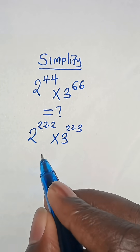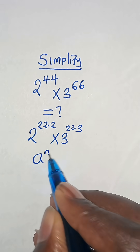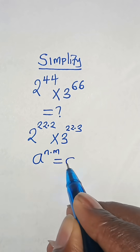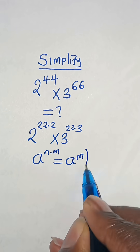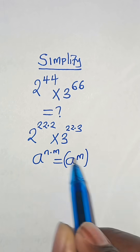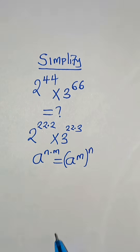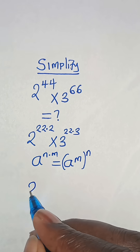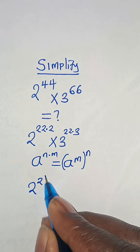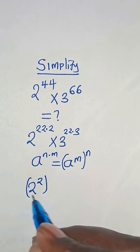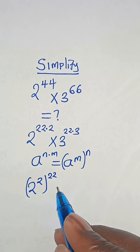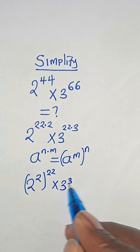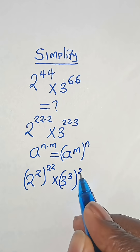This is in the form of A to the power of N times M, which we can express as A to the power of M raised to the power of N. Applying this exponent property, we have 2 to the power of 2 raised to the power of 22, multiplied by 3 raised to the power of 3, then raised to the power of 22.